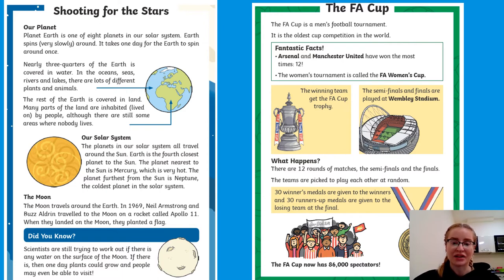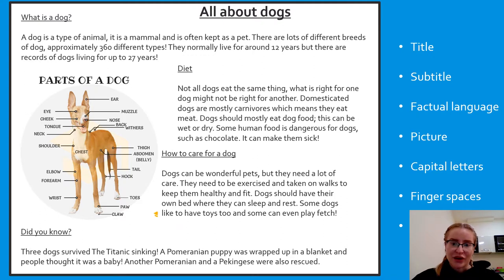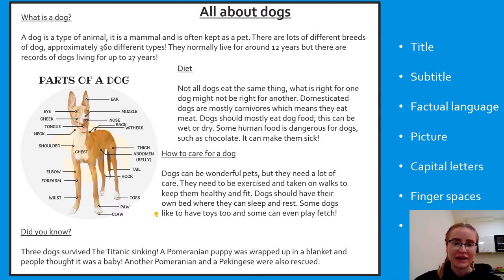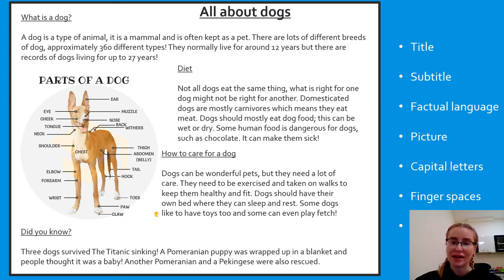I have actually written my own fact file and I'm going to take you through the text and explain the features. I wrote it all about dogs because they are my favourite animal, and I also thought it would be helpful because when we write our fact file about oils, they're also animals, so we can use this one to really help us. At the top I have put a title: 'All About Dogs'. Then I've got some headings: 'What is a Dog?', 'Diet', 'How to Care for a Dog', and 'Did You Know?' These bits of text with a line under them are called subtitles.